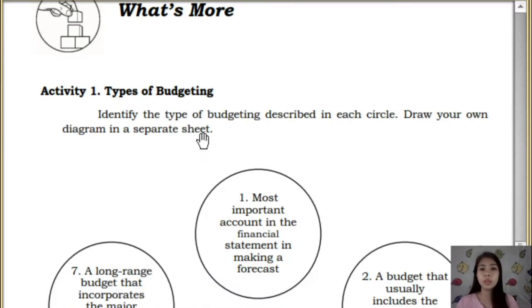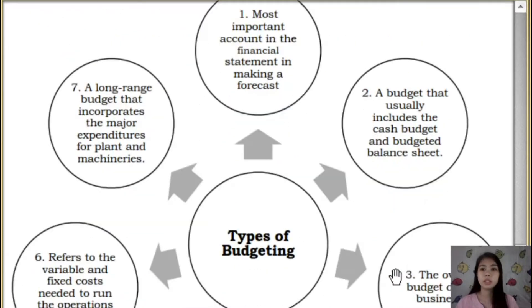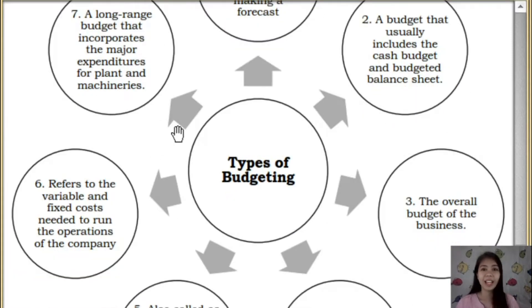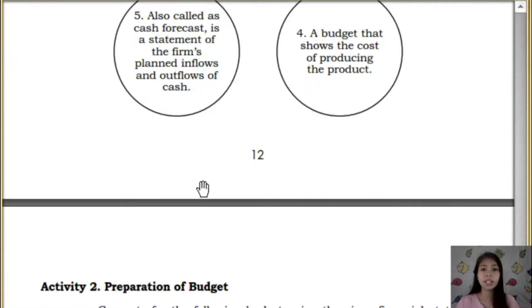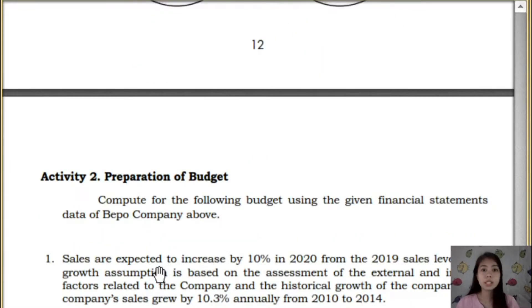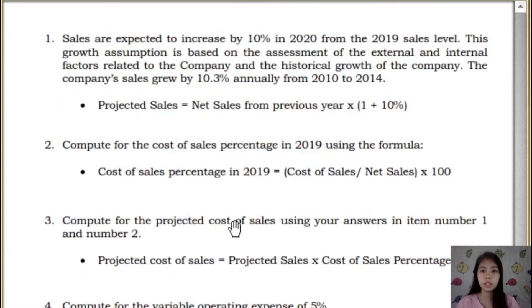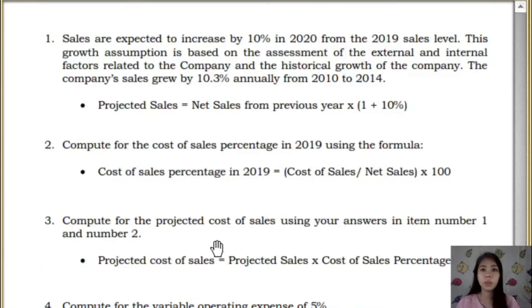You're just going to identify the type of budgeting described in each circle. So, you have 7, and based on the discussion, it is 7. Then, the next one is the Preparation of Budgets. As I said in Part 2, this is the practice activity where you can generate the forecast on sales, cost of sales, and other operating expenses.